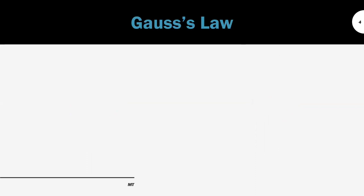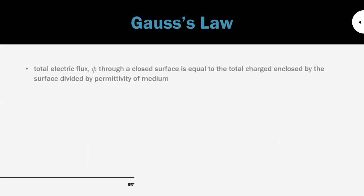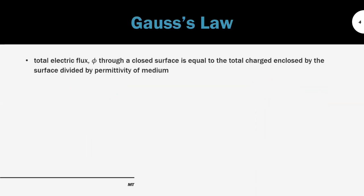Next is the Gauss law. Gauss law states that the total electric flux is equal to the total charge divided by the permittivity of the medium. Combined with the formula of electric flux, we have the formula EA equal to charge divided by the permittivity of the medium.